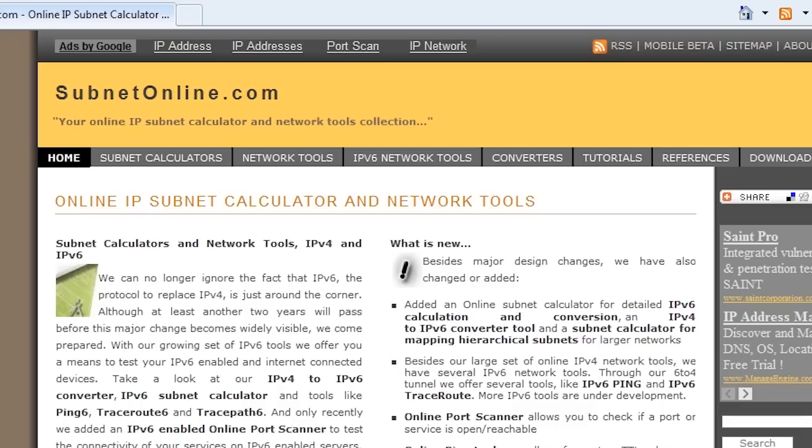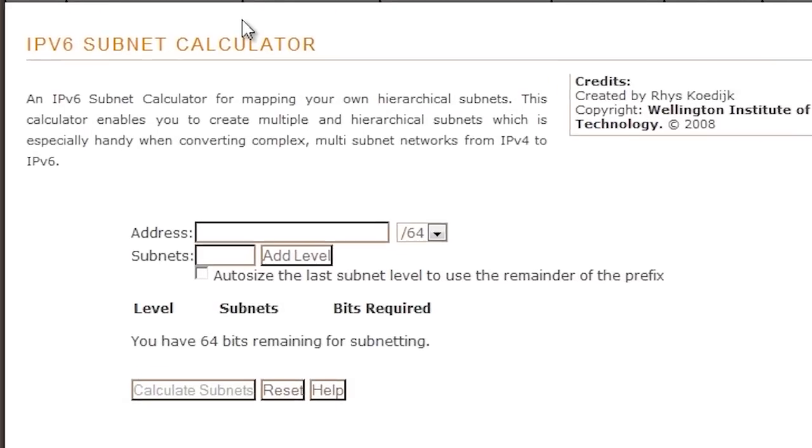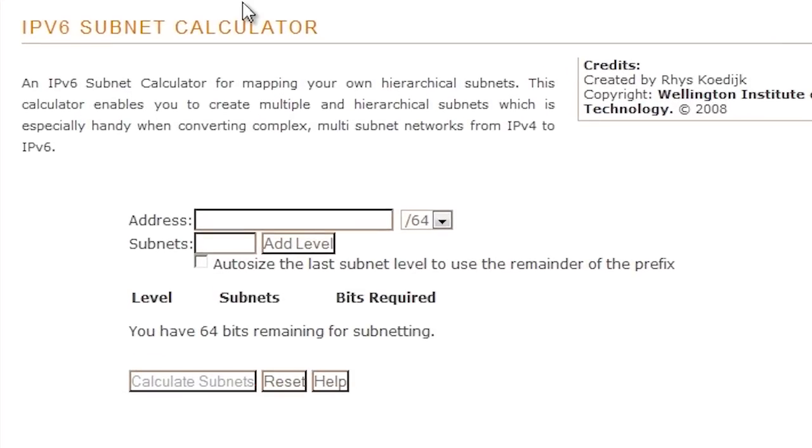In this case I will select subnet calculators and select the option IPv6 subnet calculator. This tool will work out the ranges for each level when given the number of subnets you require. It is important to factor in some future expansion when putting in these figures.